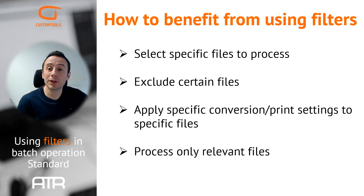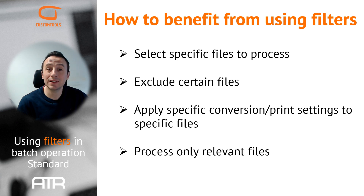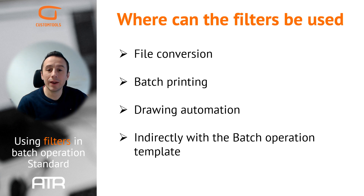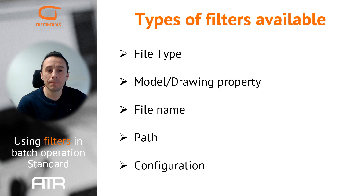As you will soon observe, you can create simple filters or more advanced filters depending on your specific needs. Multiple filters can be combined within the same batch operation profile. These filters can be utilized to select or exclude specific files for your batch operation, apply specific conversion settings to selected files, and improve efficiency by only processing relevant files. Filters can be assigned to your file conversion, batch printing and drawing automation profiles. With each release of custom tools, we have expanded the filtering capabilities to optimize file selection.